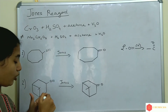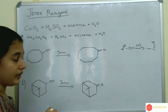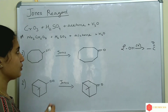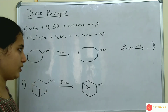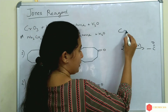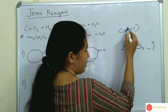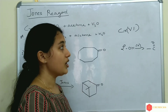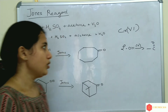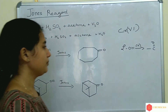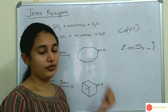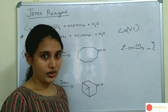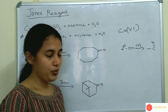Jones' Reagent is CrO3 plus chromium trioxide in sulfuric acid and acetone mixture. In Jones' Reagent, CrO3 is in the +6 oxidation state. Chromium +6 is carcinogenic. Also, the disadvantage of Jones' Reagent is that it cannot oxidize compounds containing acid sensitive groups.